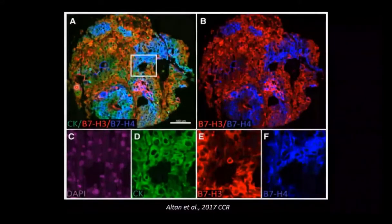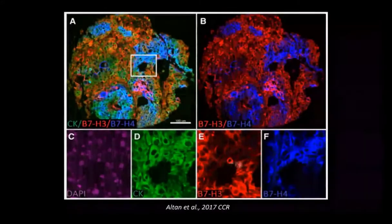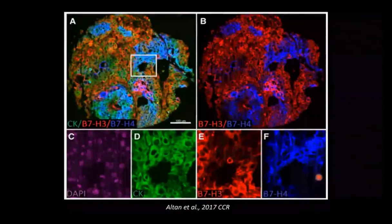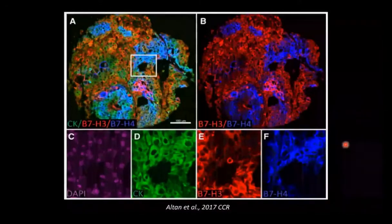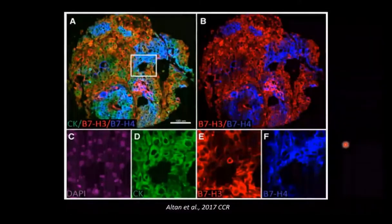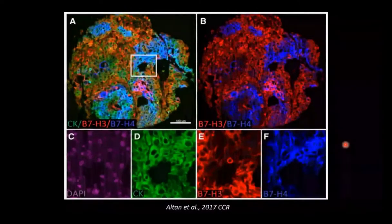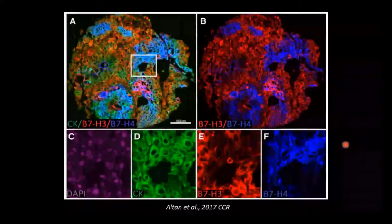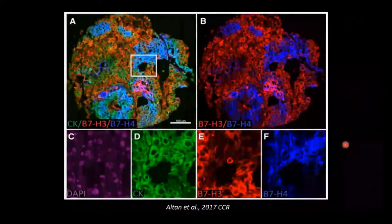This is a confocal imaging example using B7H3 and B7H4, where we looked at the presence of tumor cells via green cytokeratin. At confocal resolution, there is essentially mutual exclusivity in the pattern of expression of these two targets in cancer cells, which is generally not by chance. This at least suggests that tumor cells evade by upregulating immunoevasion molecules in a dominant fashion, not necessarily having multiple upregulated at the same time.